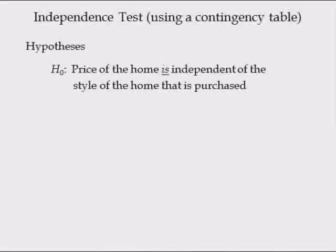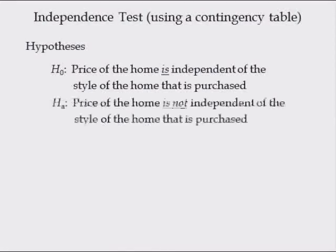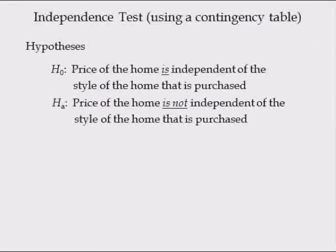The null hypothesis is that the price of the home is independent of the style of the home that is purchased. The alternative hypothesis is that the price of the home is not independent of the style of the home that is purchased.